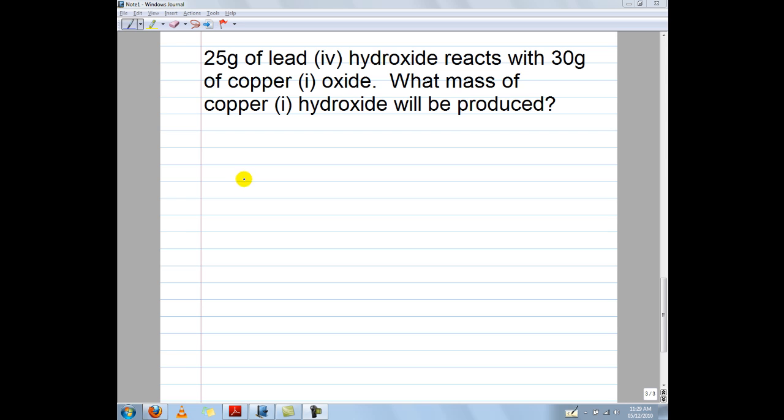When starting stoichiometry problems, we always begin by writing out the full chemical equation and balancing it. Here we have 25 grams of lead hydroxide reacting with 30 grams of copper 1 oxide. I've written the symbols for lead and hydroxide, and copper and oxygen. Just writing the symbols themselves is not enough because these compounds don't exist yet.